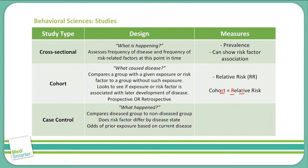Case control studies ask: what happened? This looks at diseased groups and compares them to a non-diseased group — is there a risk factor that differs by diseased state? For example, seeing a group with COPD, did they have a risk factor of smoking in the past compared to those patients that don't have COPD? It's looking at the odds of prior exposure based on current disease, and this measures the odds ratio.